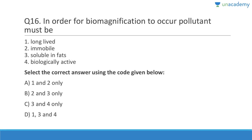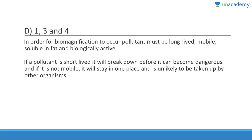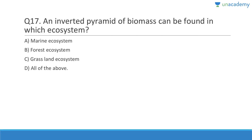Question 16: In order for biomagnification to occur, the pollutant must be long-lived — correct; immobile — not needed; soluble in fat — must be; biologically active — must be. Answer is D, 1, 3, and 4. The pollutant also has to be mobile, not immobile.